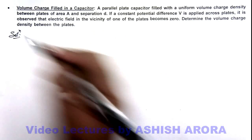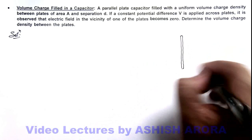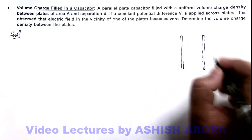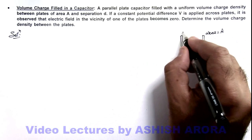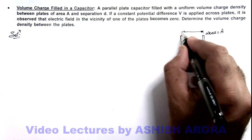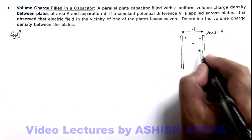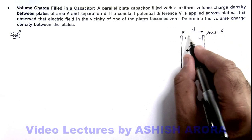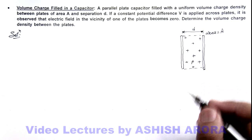Here, if we draw the picture of the capacitor, we can consider these are the two plates of the capacitor which are parallel to each other, each of area A, and their plate separation given to us is d. A uniform volume charge density is filled between the plates of the capacitor. We assume the charge density between the plates is ρ coulombs per meter cubed.